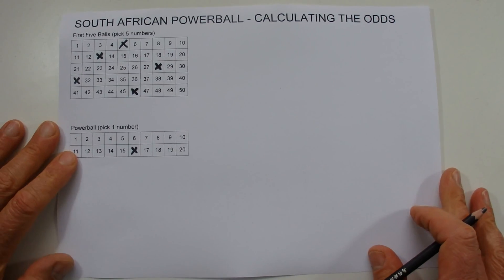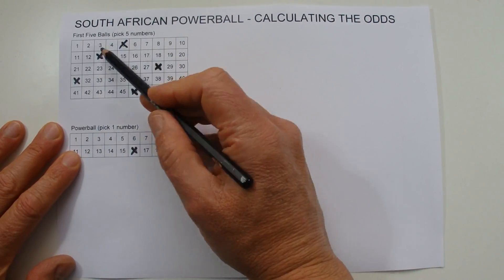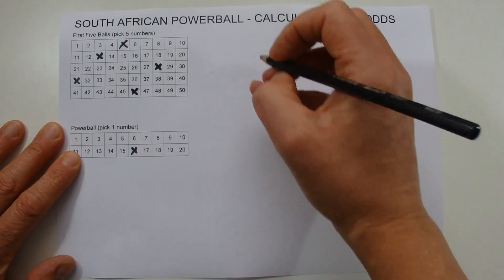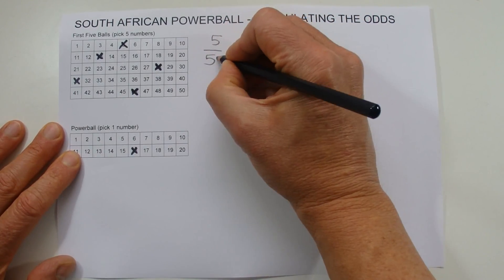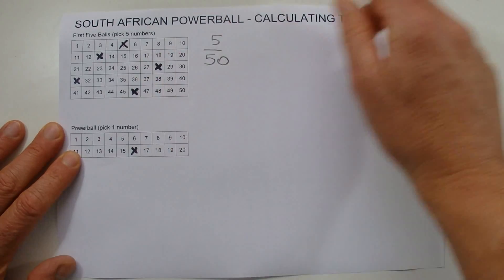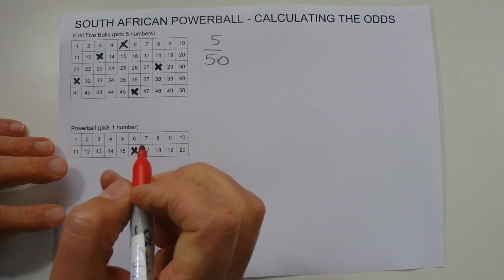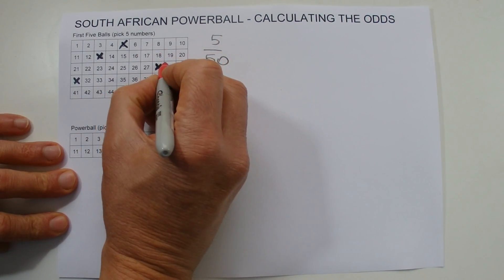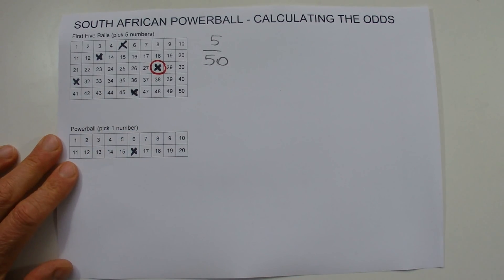So what happens then when you're watching the draw, there's 50 numbers in the barrel and you've got five chances in 50 of the first number being drawn also being on your Powerball coupon as one of the numbers that you've selected. So say then that is successful, we'll just mark off randomly one of those numbers and pretend that number 28 was drawn.